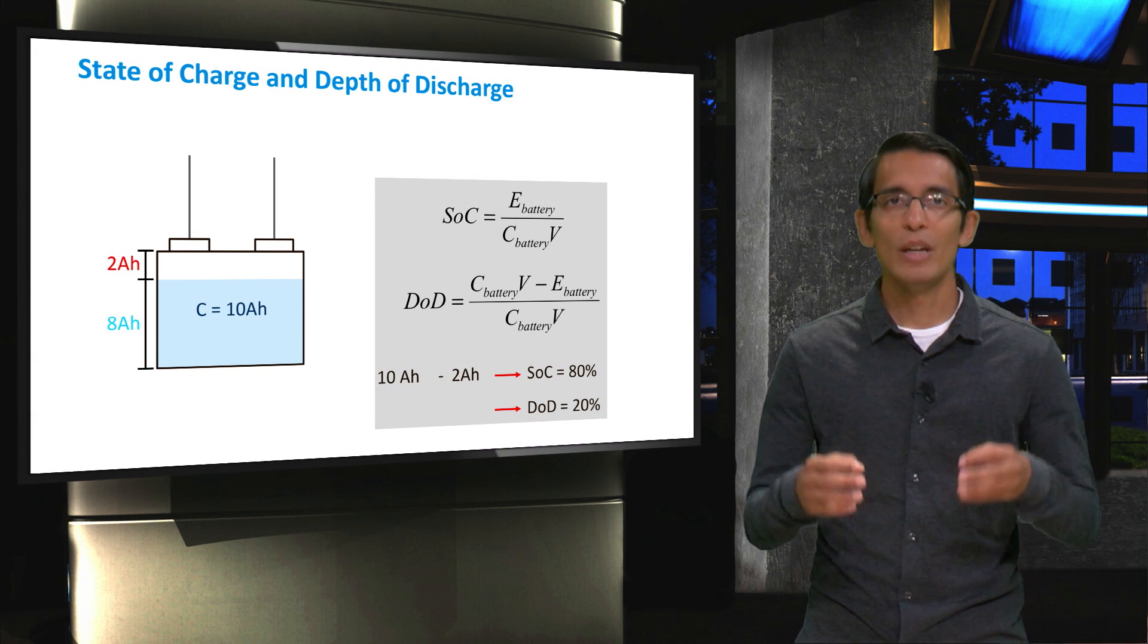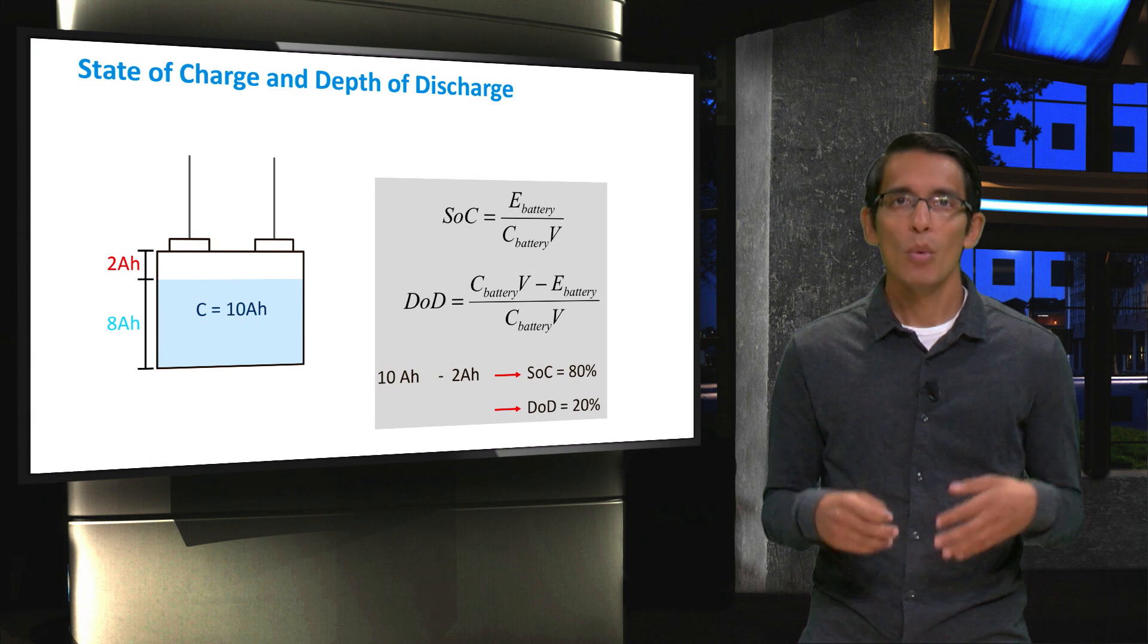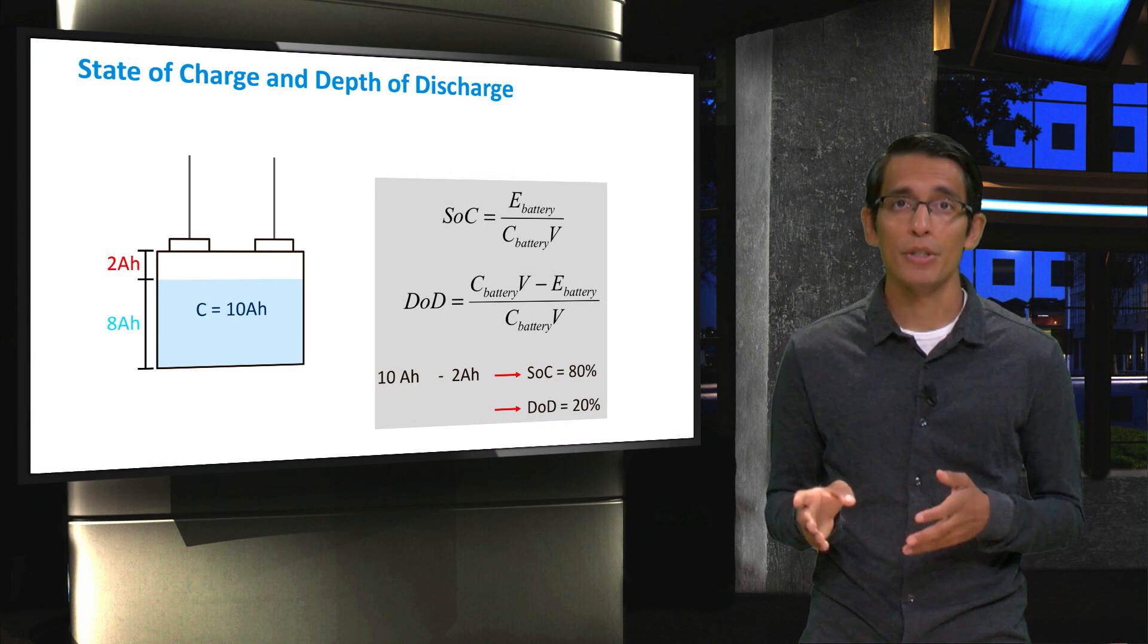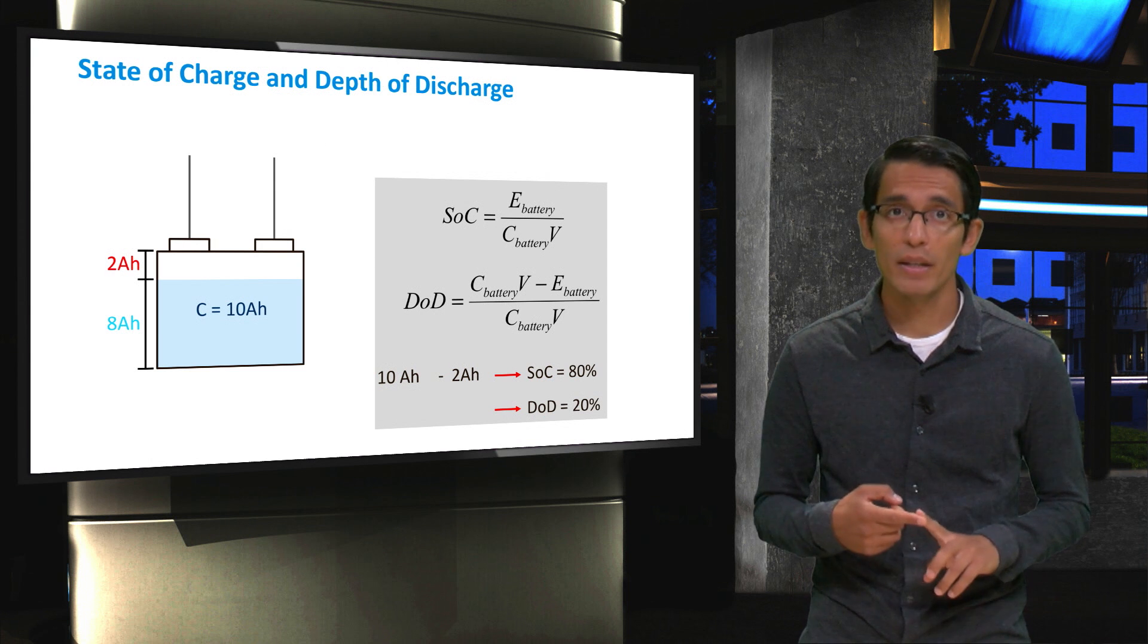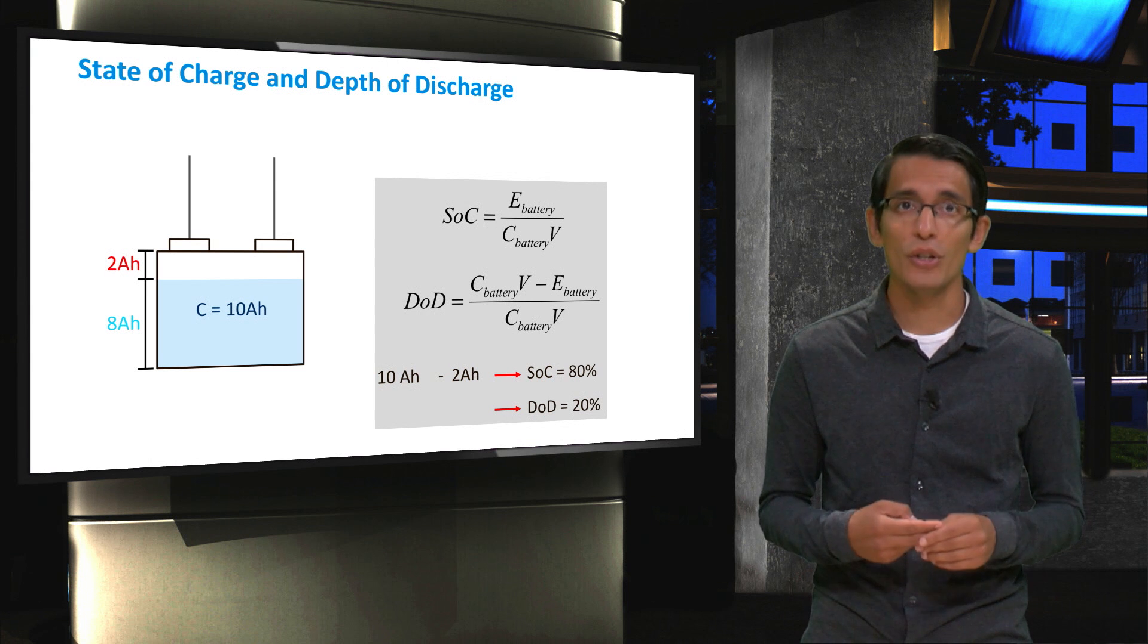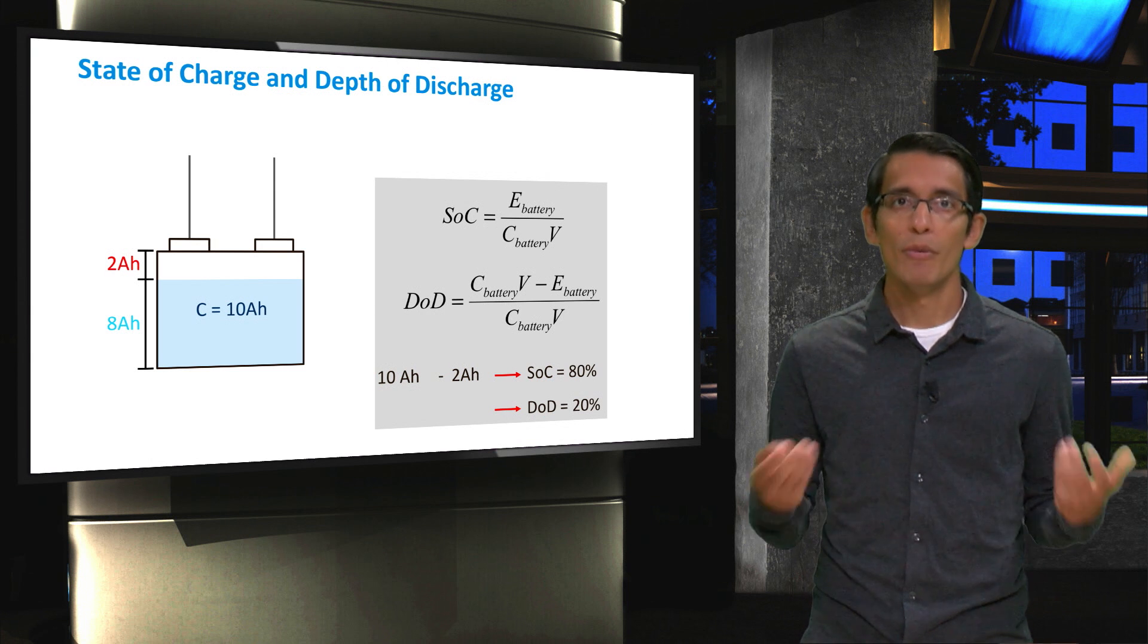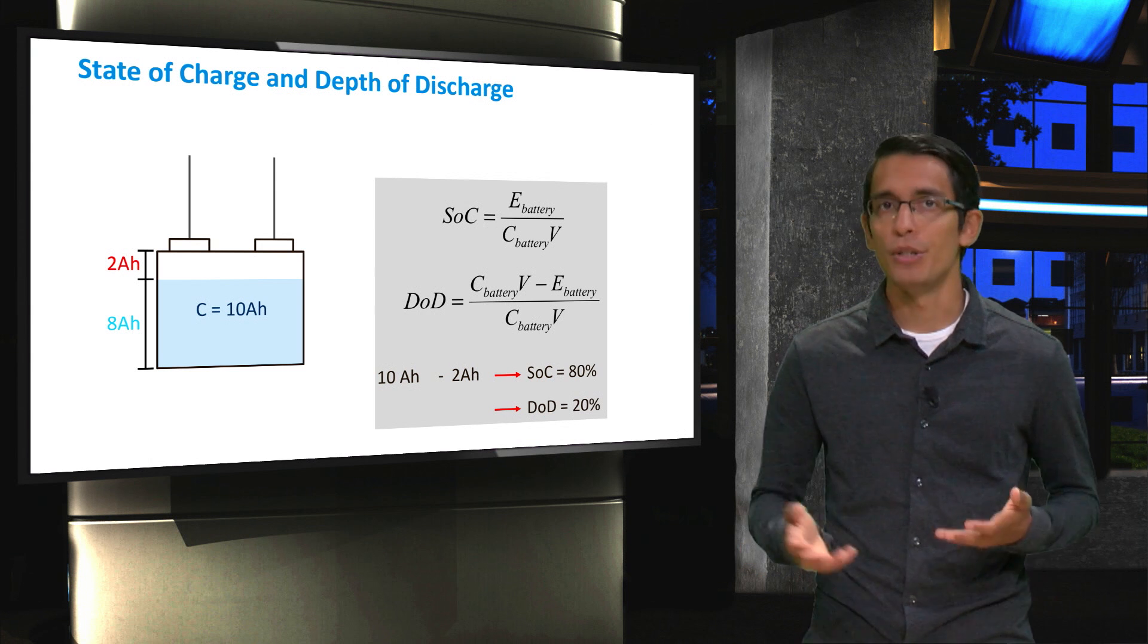As an example, consider a 10 amp hour battery, which has been drained by 2 amp hours. For this battery, it is said to have a state of charge of 80% or a depth of discharge of 20%. From this, we can see that both terms are complementary to each other.